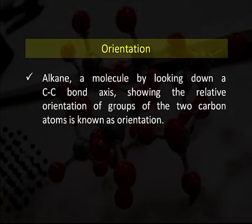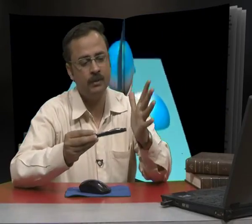Now we will discuss orientation. Viewing an alkane molecule by looking down a carbon-carbon bond axis and observing the relative orientation of groups on two carbon atoms is known as orientation. When the two carbon atoms are joined by a single covalent bond, rotation of the hydrogen atoms at various angles gives different forms — such as anti form, gauche form, and staggered form. These projections are known as Newman projections.